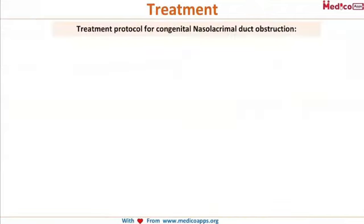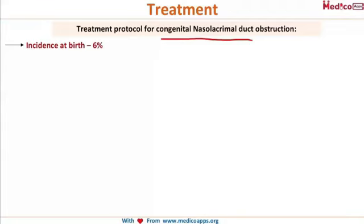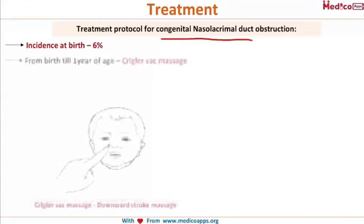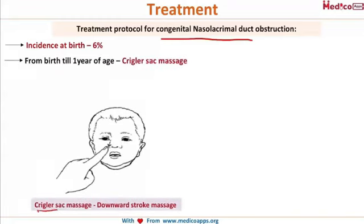Treatment depends on the time of presentation. For congenital NLD obstruction, about 6% of babies have obstruction of their lacrimal pathways. If the baby presents within one year of age, the mother is advised to perform Criggler's massage — applying pressure over the lacrimal sac area with a finger and pulling downward, 15 to 20 times per session, three to four times a day.